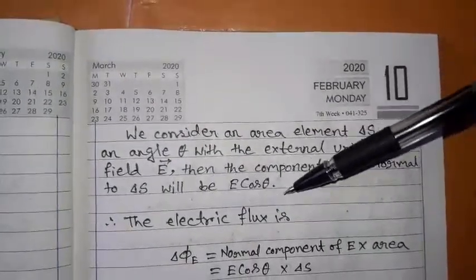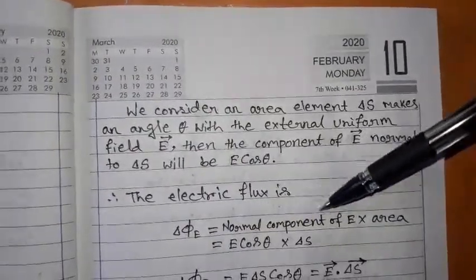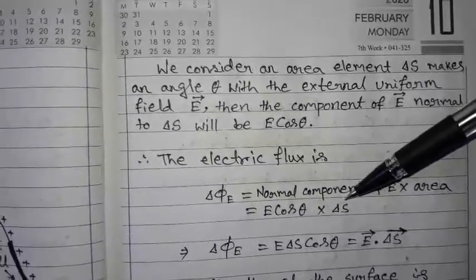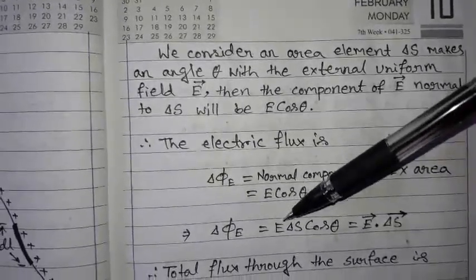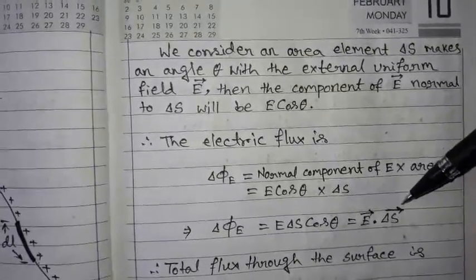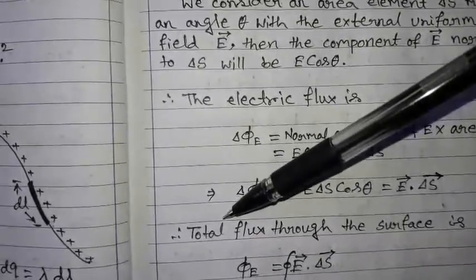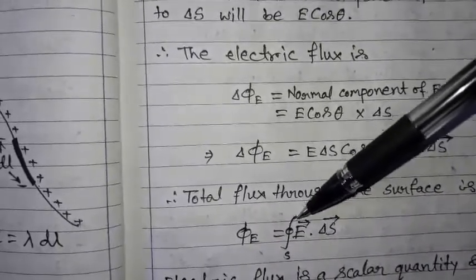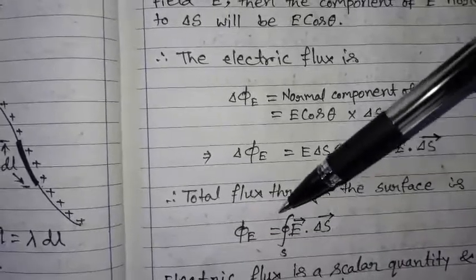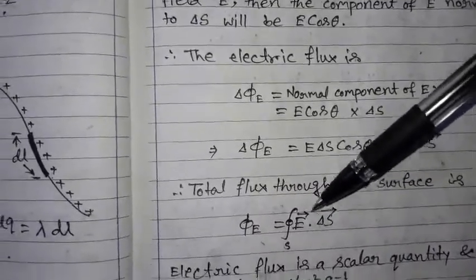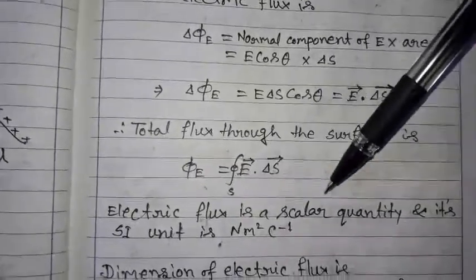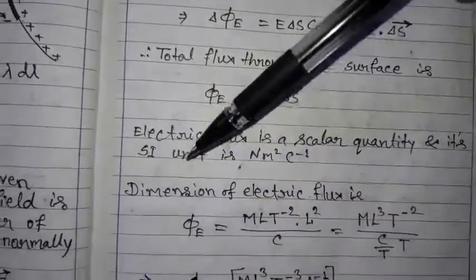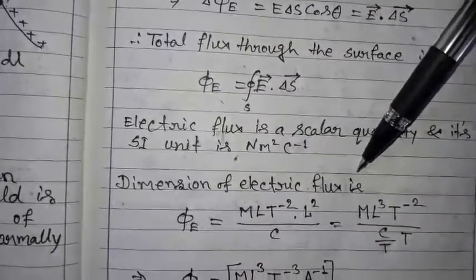The electric flux is dφ_E equal to the normal component of E into area, equal to E cos θ into ΔS, which we can write as E ΔS cos θ. In vector notation this is E dot ΔS. So the total flux through the surface is φ_E equal to the integration of E dot dS over the whole surface S. Electric flux is a scalar quantity and its SI unit is newton meter squared per coulomb.